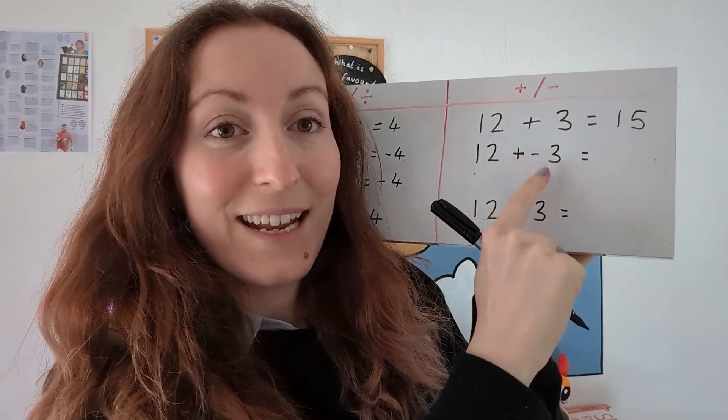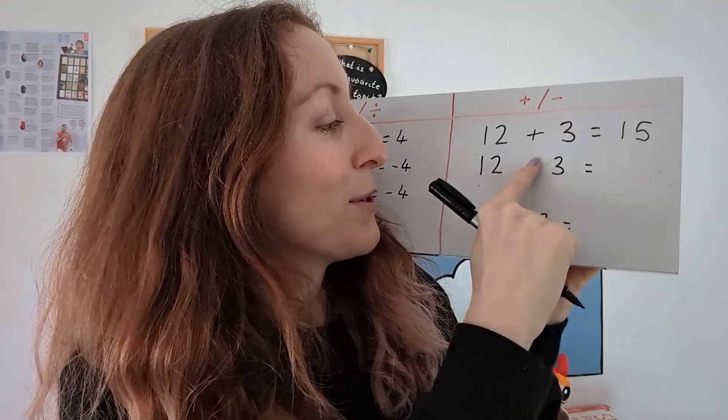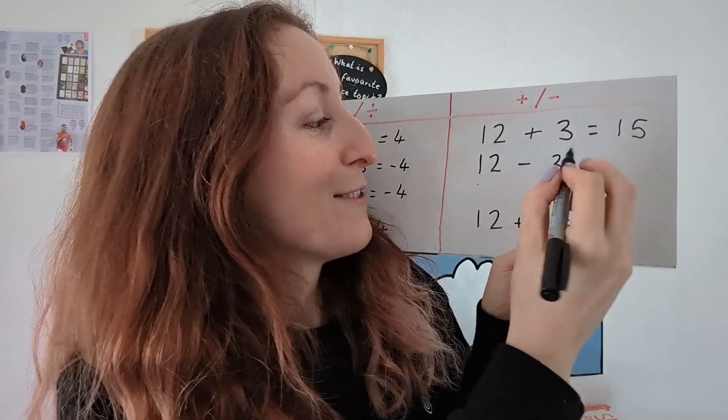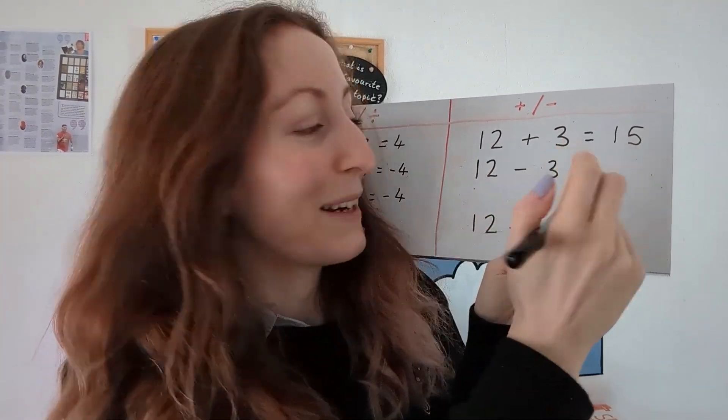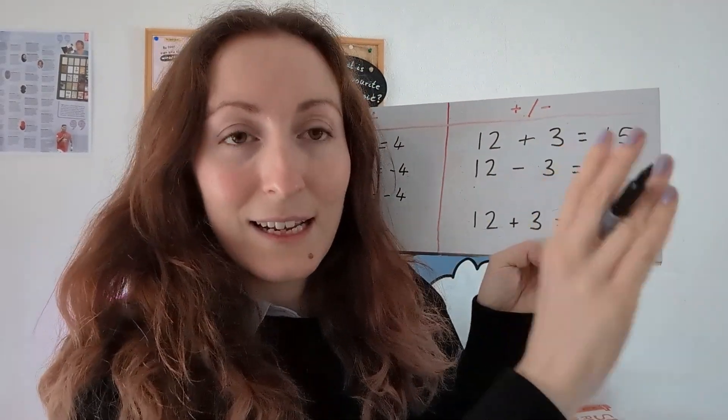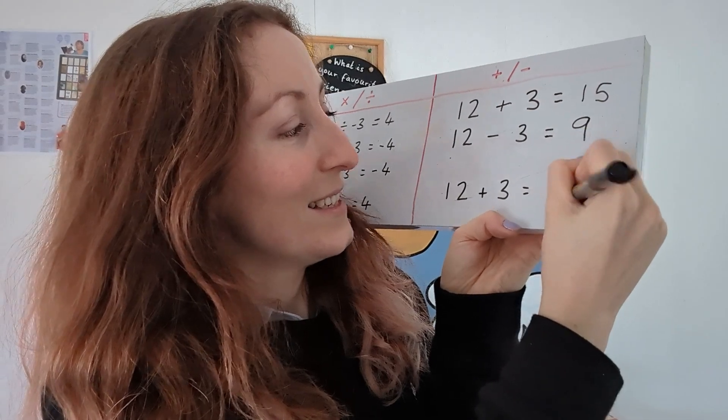And with this one a positive and a negative does make a negative but we change the signs themselves. A positive and a negative makes a negative. So instead of doing 12 plus minus 3 we do 12 minus 3 and we get 9. So 12 plus minus 3 is 9. And of course 12 plus 3 is 15.